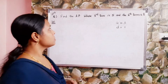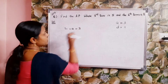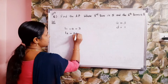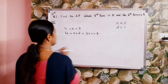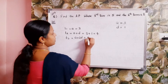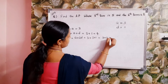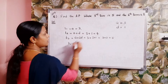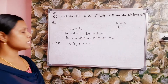Now we form the AP. First term t1 equals a equals 3. Second term equals a plus d equals 3 plus 1 equals 4. Third term equals a plus 2d equals 3 plus 2 equals 5, etc. Therefore, the AP is 3, 4, 5, etc.